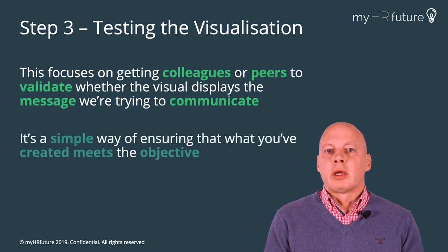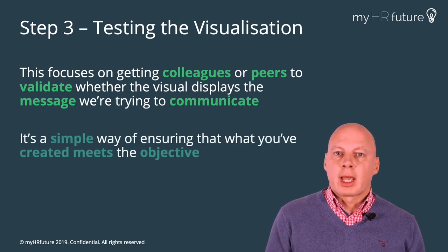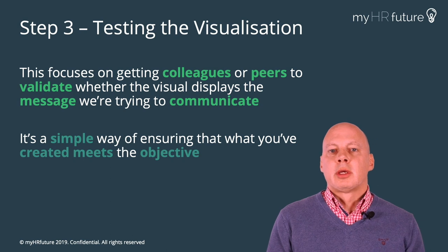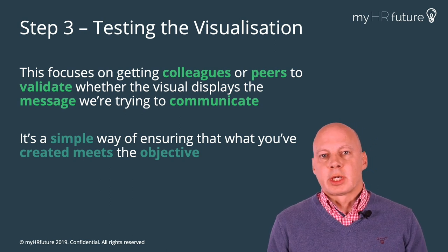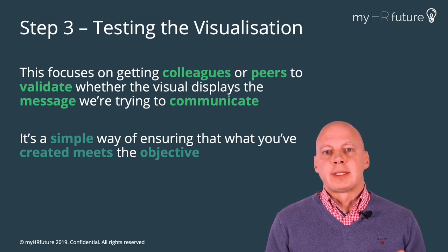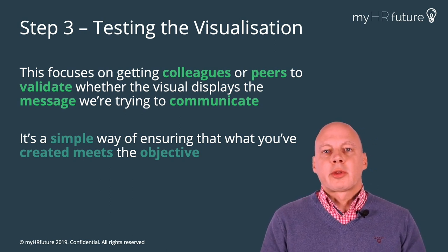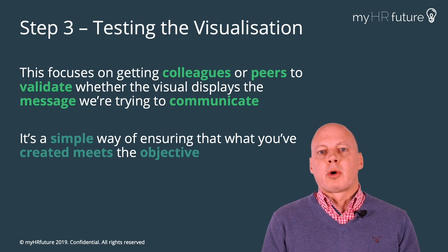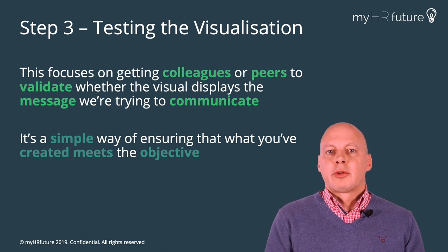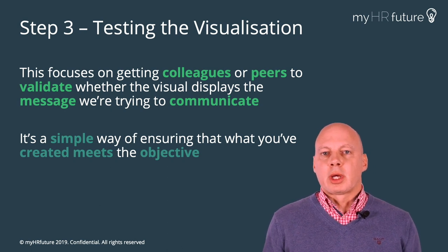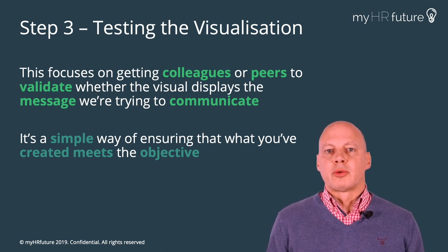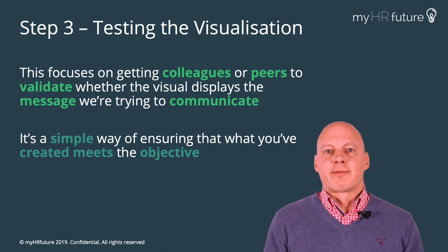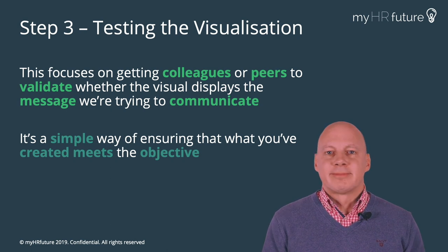It's a simple way of making sure that what you're actually showing achieves the objective of what you intended to show. That's a simple stepwise fashion to thinking through how to use visuals in storytelling. Now let's go on to the five techniques.